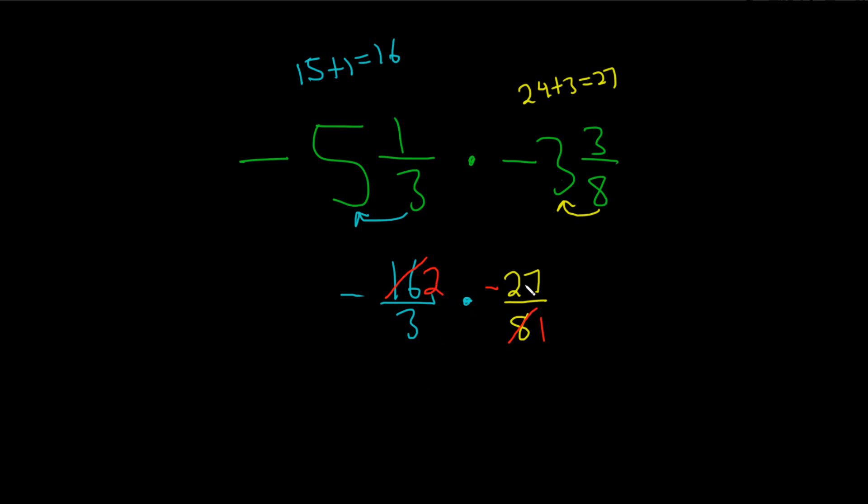And then now we do the same thing here with these. So 3 goes into 3 one time. Cross it out and put a 1. This is a little bit harder. 3 goes into 27 nine times. So you cross it out and put a 9. All right. This is equal to.